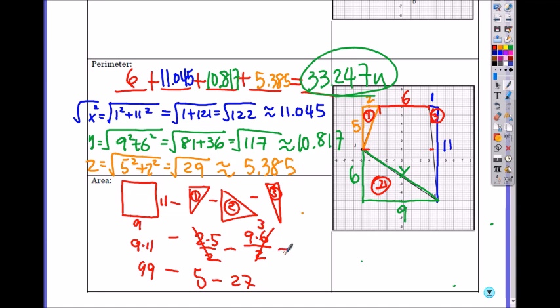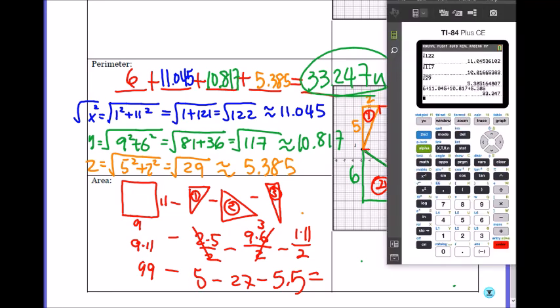minus the last triangle, which will be 1 by 11 divided by 2, which is 5.5. So when you plug into the calculator, you can add these three first and subtract them once, or just subtract them separately, 99 minus 5 minus 27 minus 5.5.